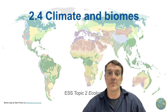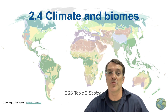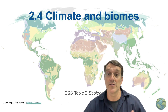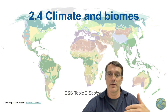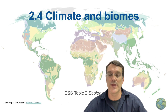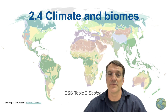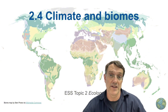Welcome to another IB Environmental Systems and Societies video. Today's topic is the standard level content for topic 2.4, Climate and Biomes. This map behind me shows how Earth's major ecological zones are distributed around the world. These patterns aren't random — they're the result of complex interactions between atmospheric and oceanic systems that create distinct climatic conditions in different regions. We're going to examine how these conditions shape Earth's biomes and how they're responding to environmental change.